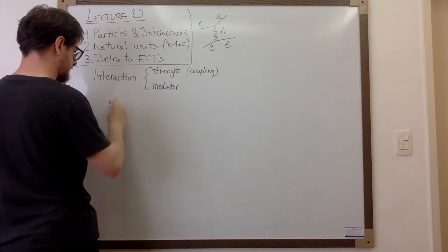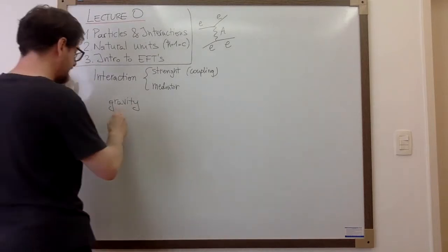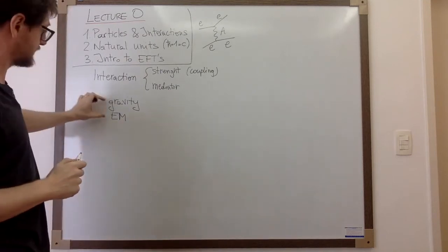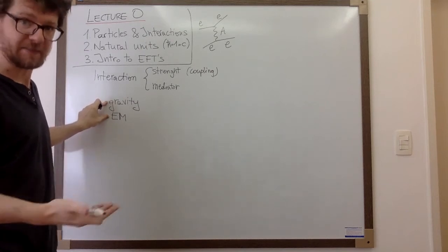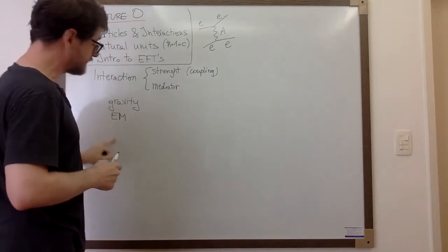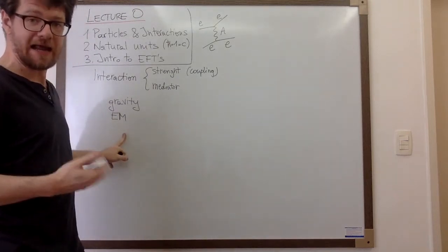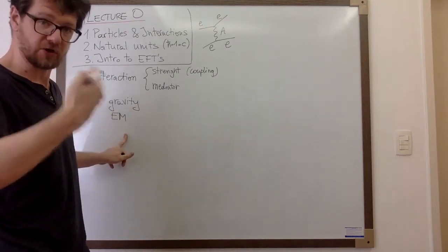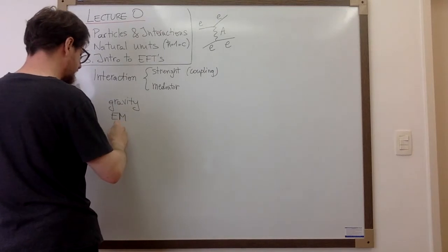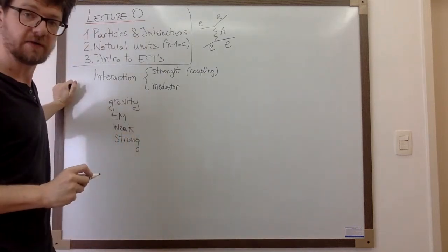The forces we know are gravity and electromagnetism — two interactions that can manifest at the classical level, related to the mass of the mediator being zero. Then we have forces that are purely quantum, because the mass of the mediator is not zero, costing a lot of energy to produce. These are the weak force, the strong force, and the most recently discovered Higgs force.